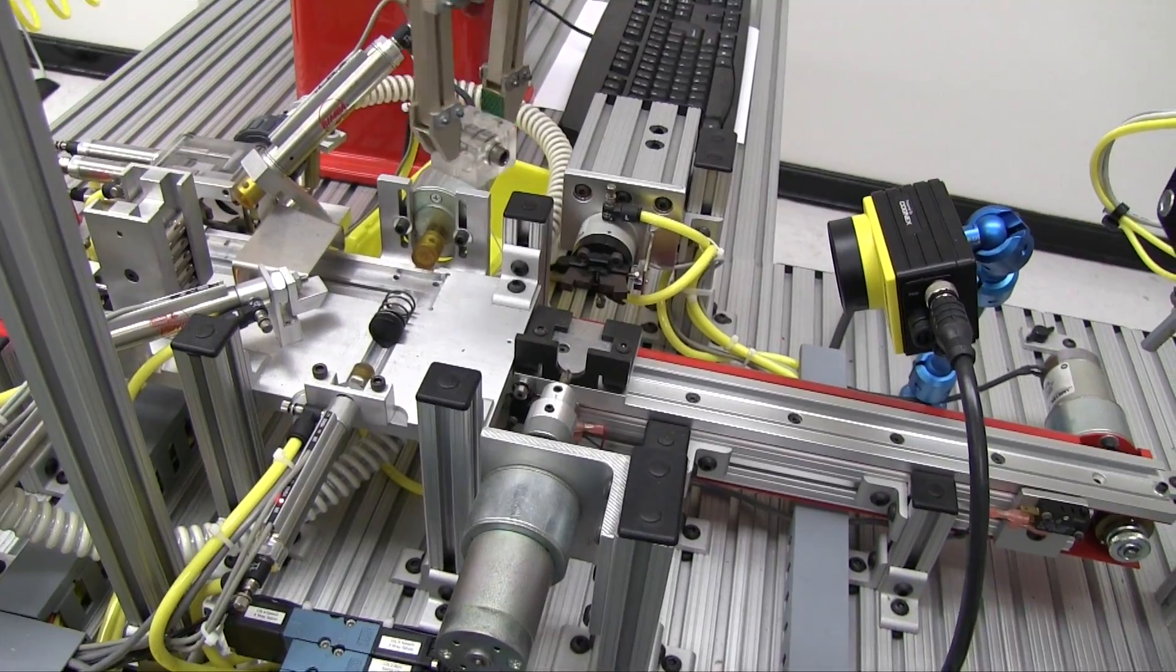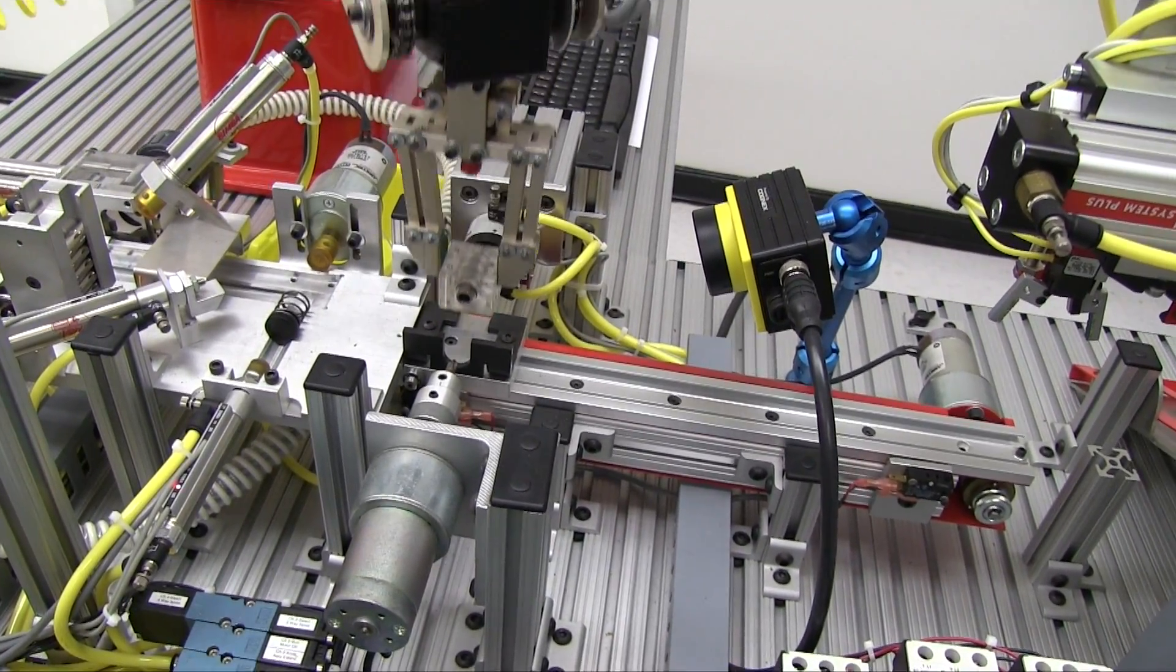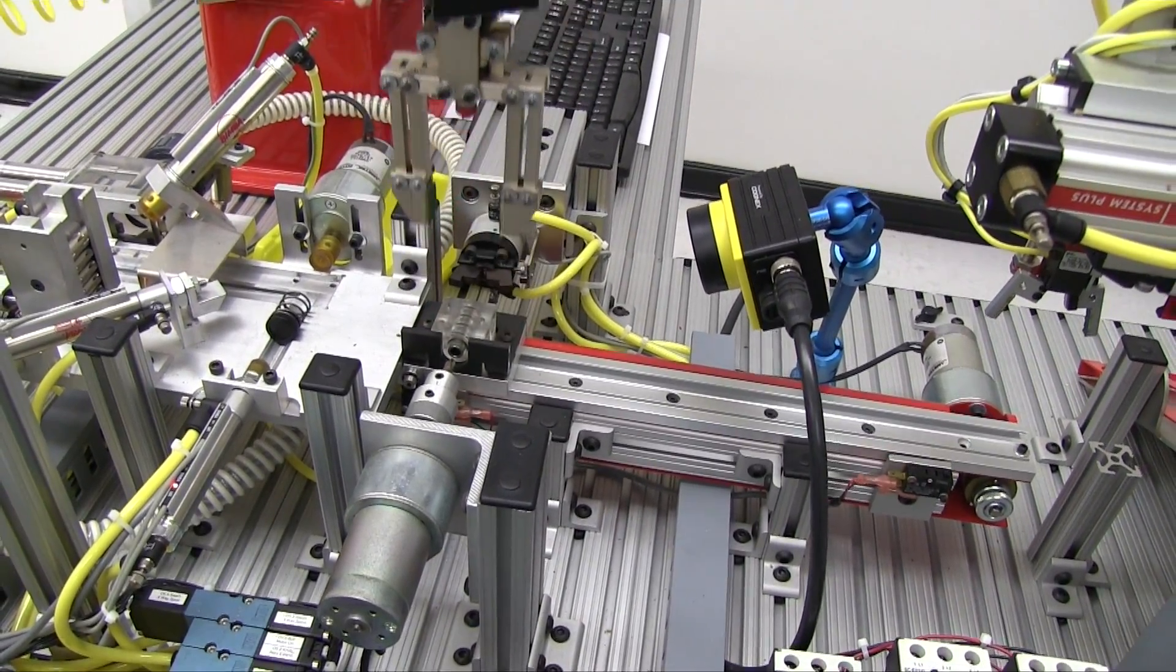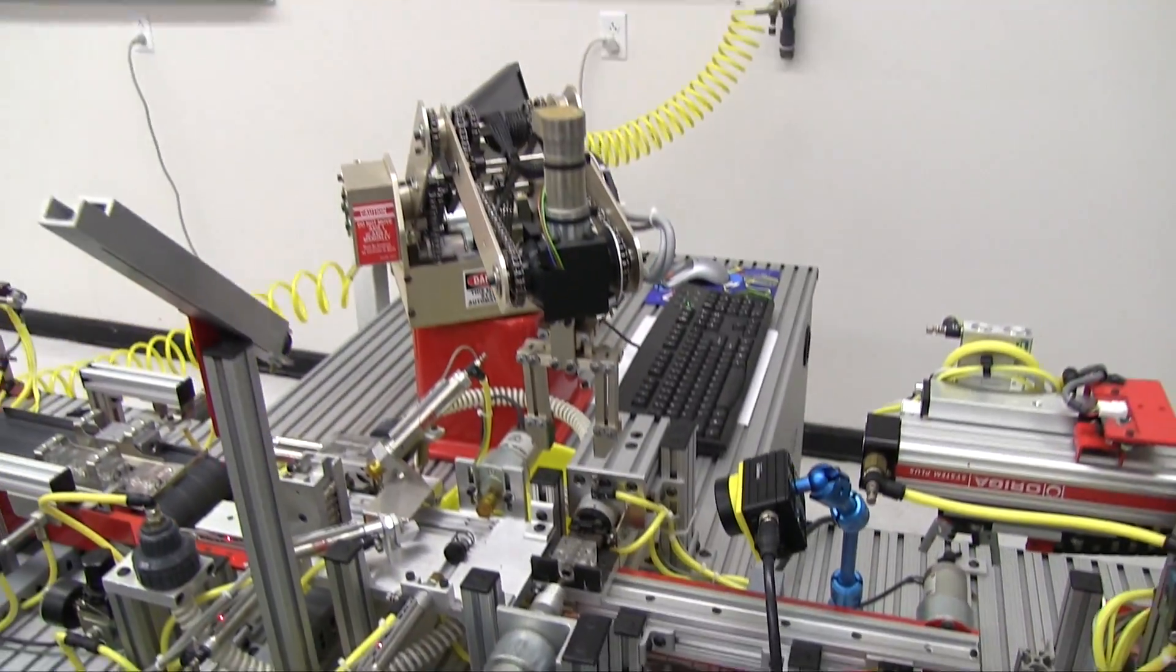Electromechanical is a two-year degree, and once you get out you would have all the qualifications of an industrial maintenance professional, plus the PLC background and some of the robotics background from the automation program.